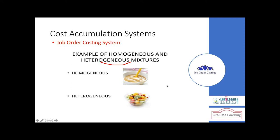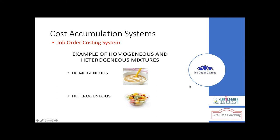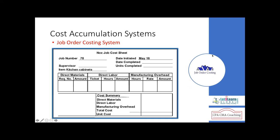Job order costing is suitable for heterogeneous products — products where customers provide specifications and requirements. We need a questionnaire to understand their requirements before giving a cost. Homogeneous products, by contrast, have a common cost for all customers — say $25 for everyone — produced without waiting for customer specifications. In job order costing, we cannot produce unless the customer tells us what they need.